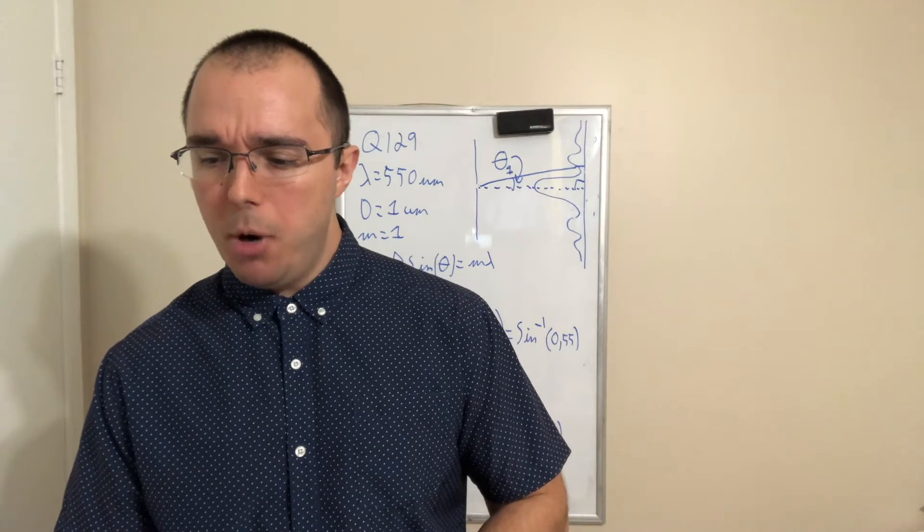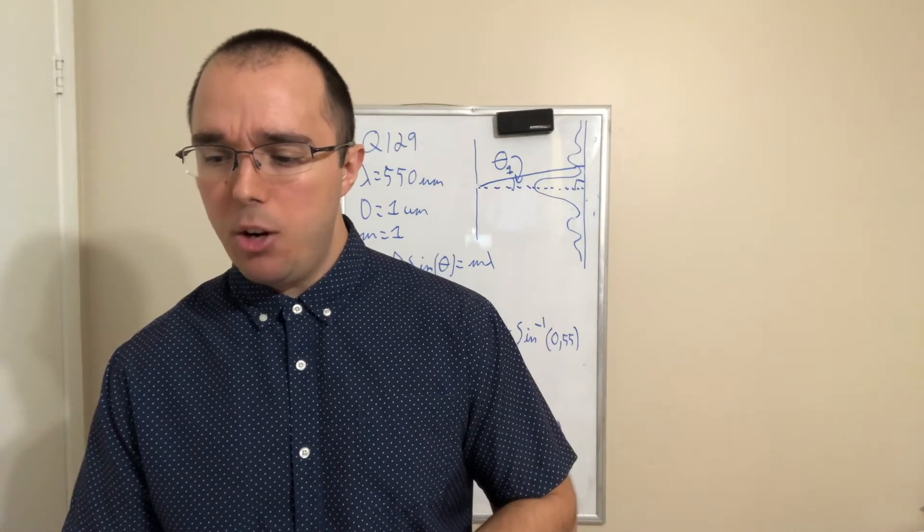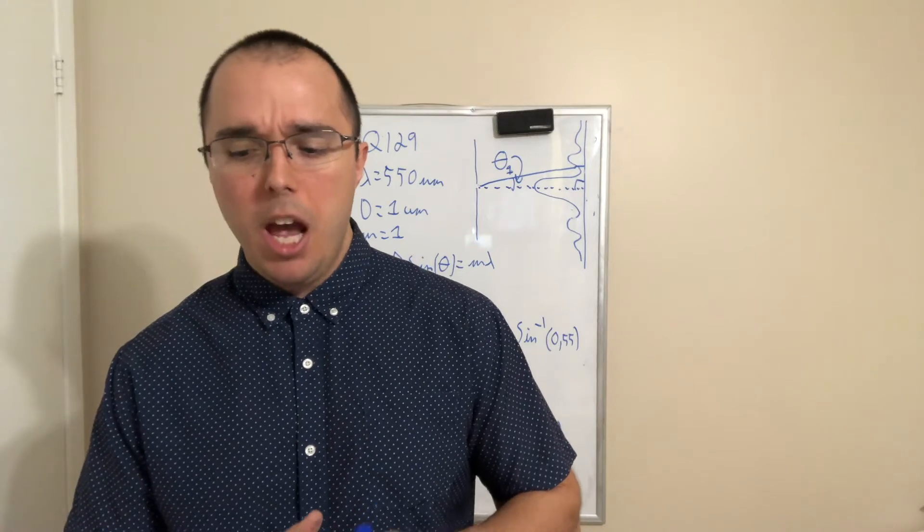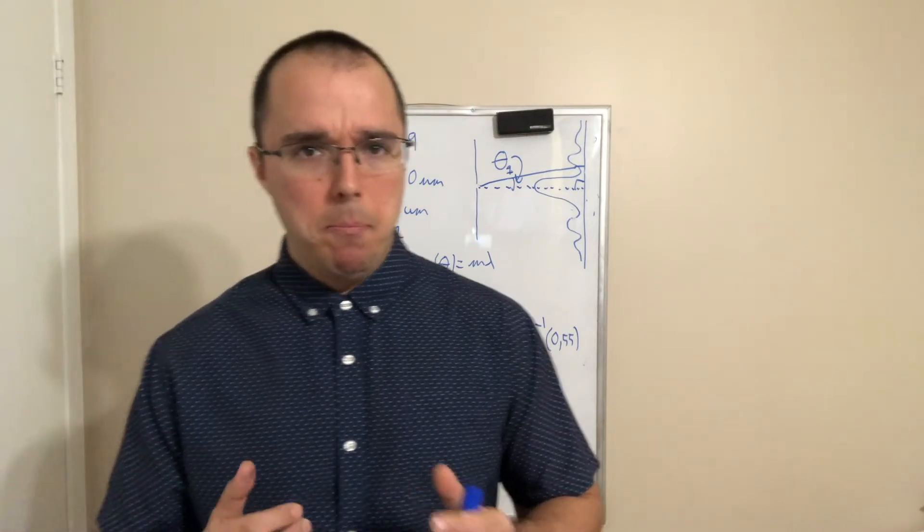At what angle is the first minimum for a 550 nanometer light falling on a single slit of width 1 micrometer? In part B, will there be a second minimum?